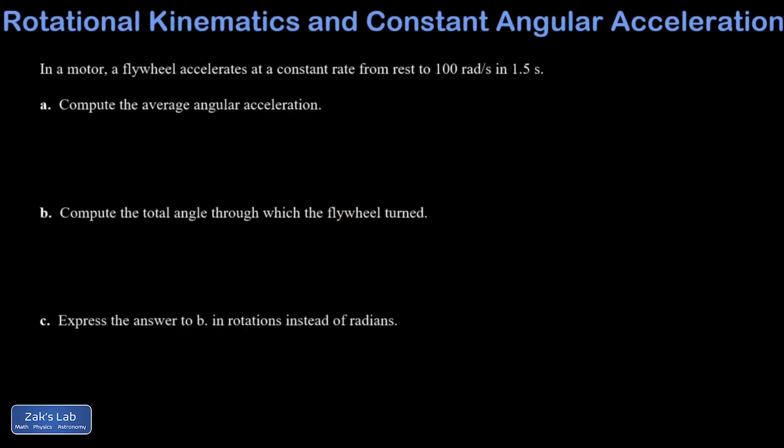So let's check out an example. In this introductory example, we're told that a flywheel accelerates at a constant rate from rest. Well, that means omega naught equals zero to 100 radians per second. That means omega, the final angular velocity, is 100. And the time for the process is one and a half seconds. So that's our t, t equals 1.5.